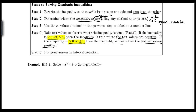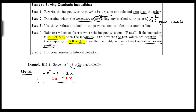Following step one, we need to get zero on one side. We're used to seeing zero on the right side, so we'll move 2x over to the left side. Originally we have negative x squared plus 8 greater than 2x; subtracting 2x from each side gives us negative x squared minus 2x plus 8 greater than zero.